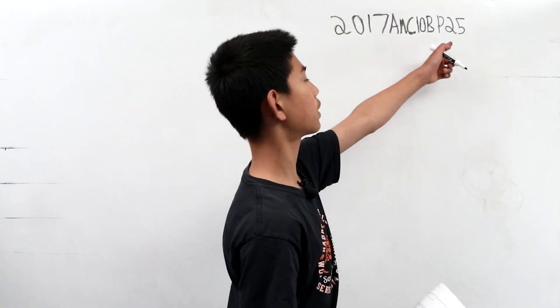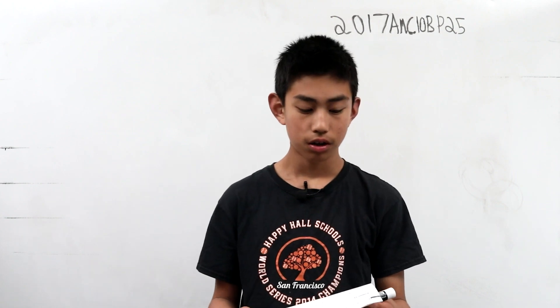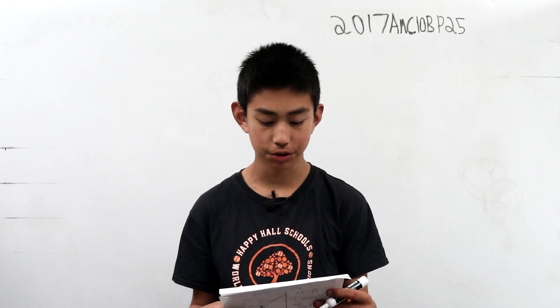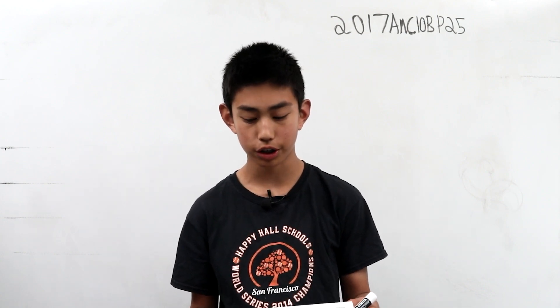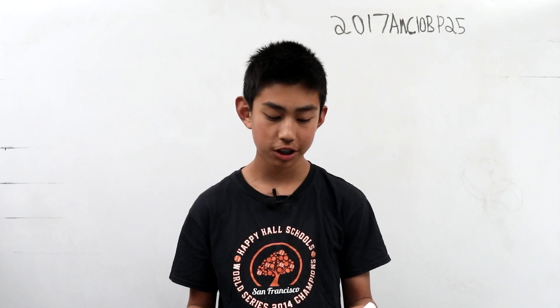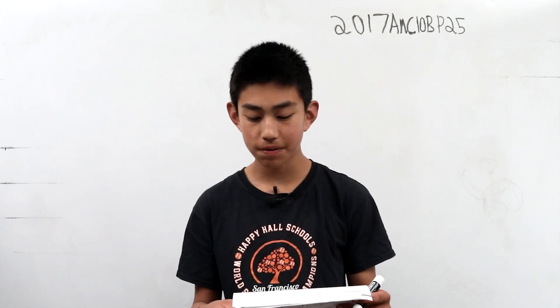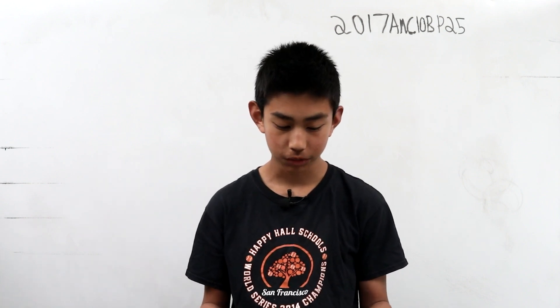We're solving problem 25 from the AMC-10B from 2017. Last year, Isabella took seven math tests and received seven different scores, each an integer between 91 and 100 inclusive. After each test, she noticed that the average of her test scores was an integer. Her score on the seventh test was 95. What was her score on the sixth test?